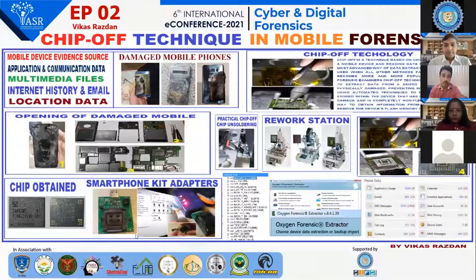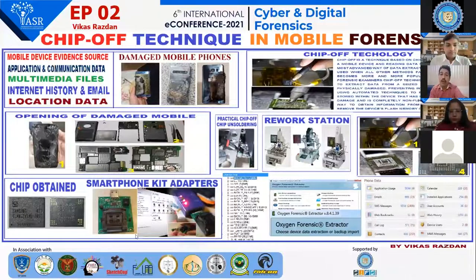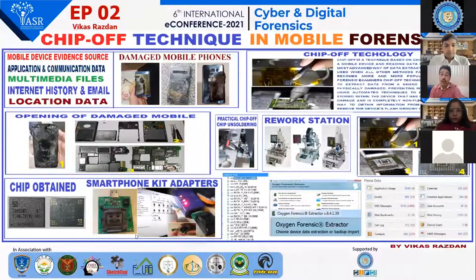The first step in the chip-off process is opening the damaged phone. The damaged phone is opened properly and the parts are kept separate. The PCB is taken out, and on the PCB we have the RAM and a small memory chip in which all the information is stored. Then we use the chip unsoldering method. The chip must not be overheated, and we use rework stations that provide the precise temperature needed to take out the chip.